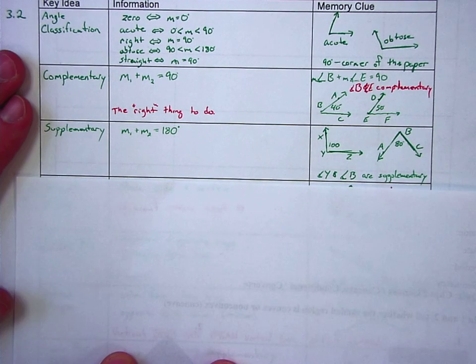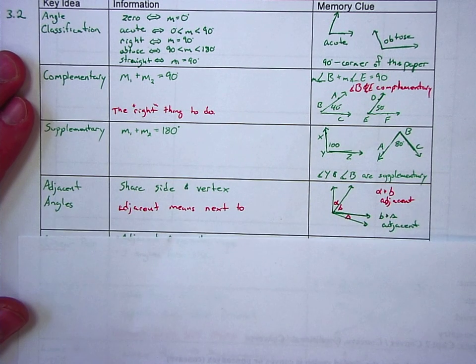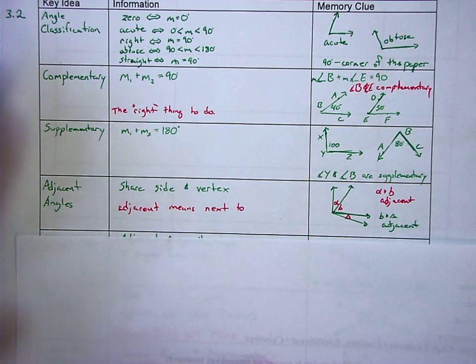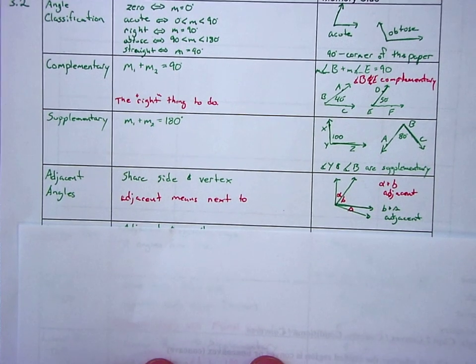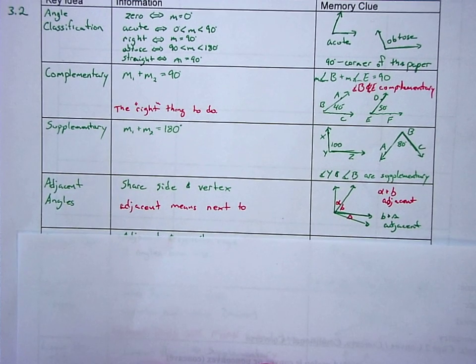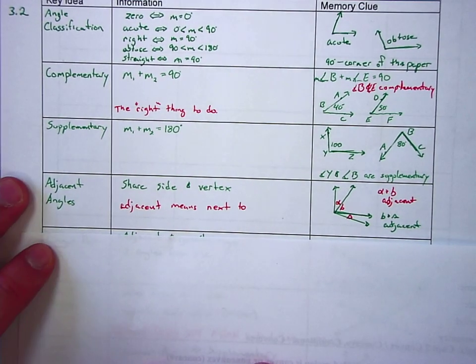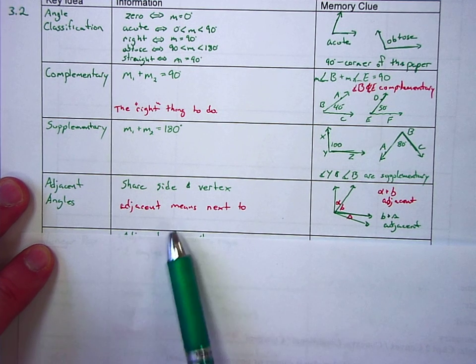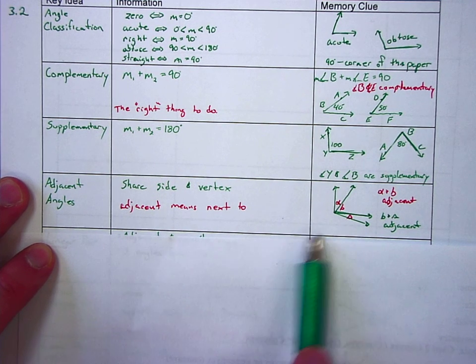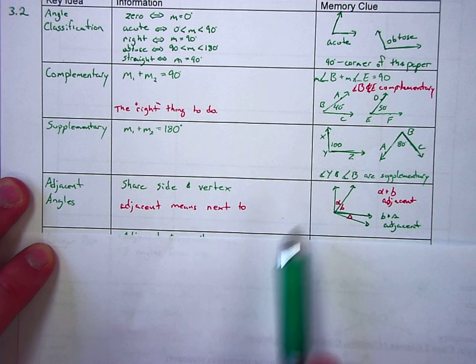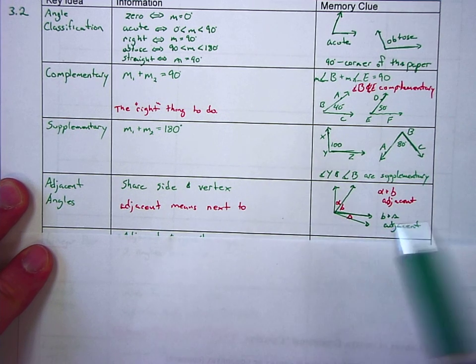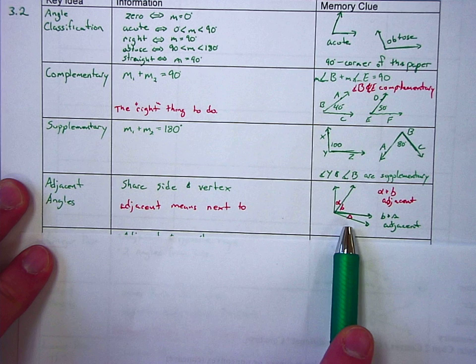Adjacent. So if you have adjacent seats on an airplane, you actually have two seats that are next to each other. The same idea here. They have to share a side and a vertex. They have to be next to each other. So this alpha and the beta, alpha and beta are adjacent. Beta and delta, delta is a little itty-bitty triangle. Beta and delta are also adjacent.